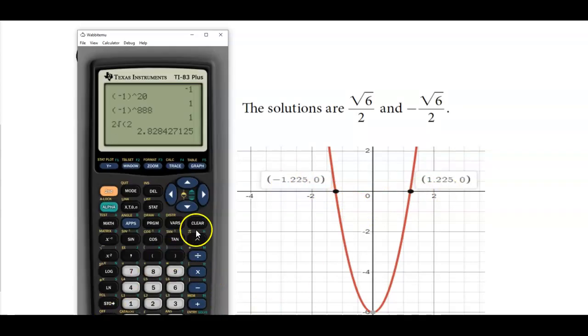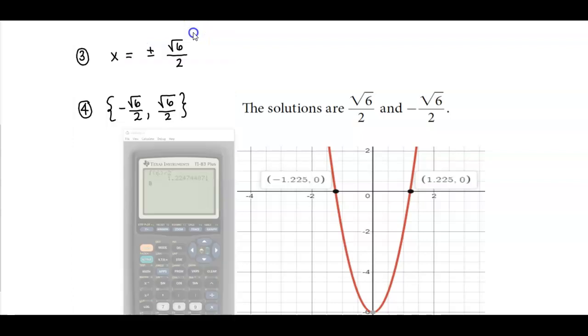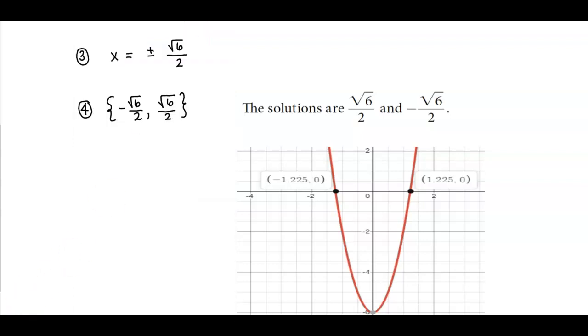Let's go ahead and check in our calculator just to verify that. If we have the square root of 6 and then divide that by 2, it gives us 1.225 when you round it to three decimal places.